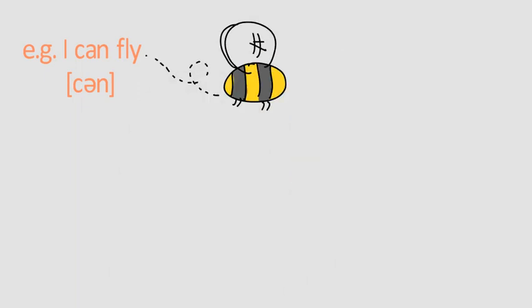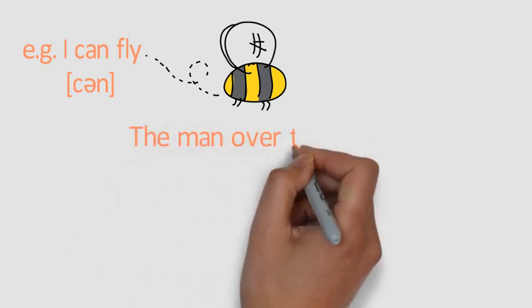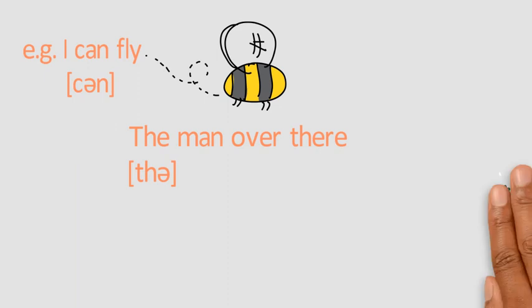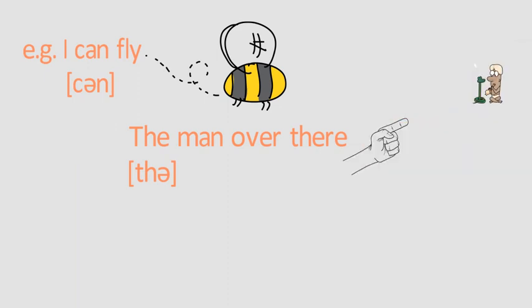'I can fly,' 'can.' Or 'the man over there' — here the stresses fall on 'man' and 'there,' so the article 'the' is pronounced in its weak form. Listen: 'the,' 'the man over there,' 'the.'